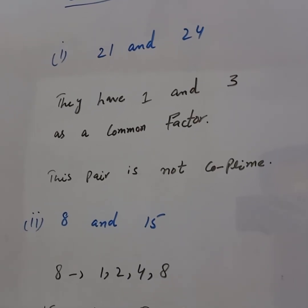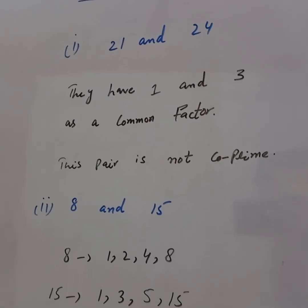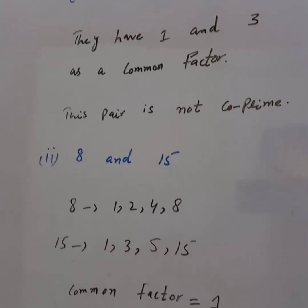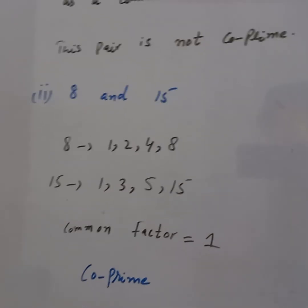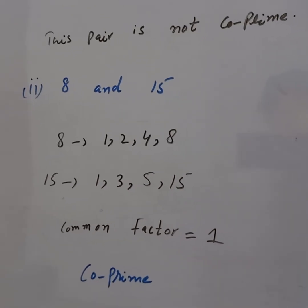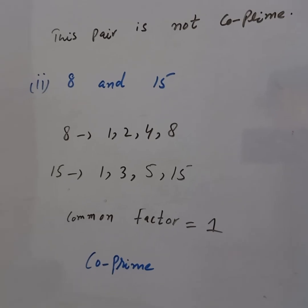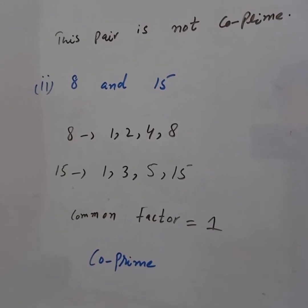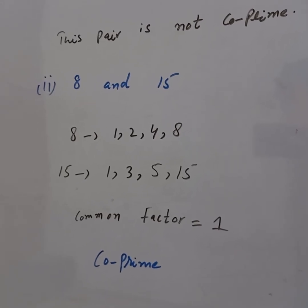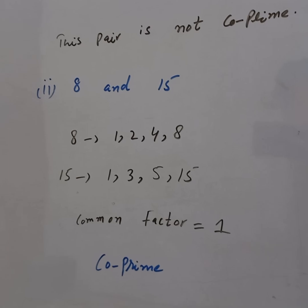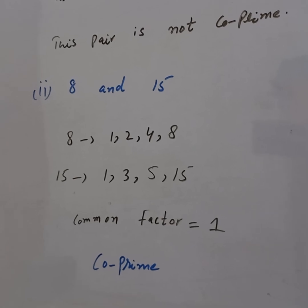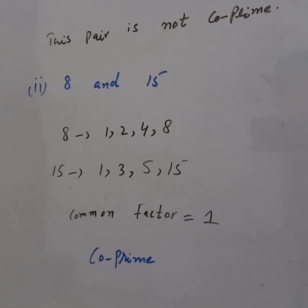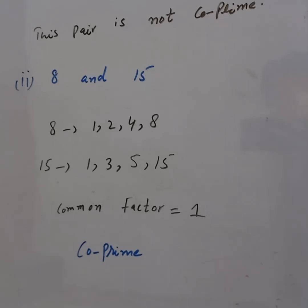Next, we see that 8 has factors 1, 2, 4, and 8, and 15 has factors 1, 3, 5, and 15. Both have different factors. The only common factor is 1.